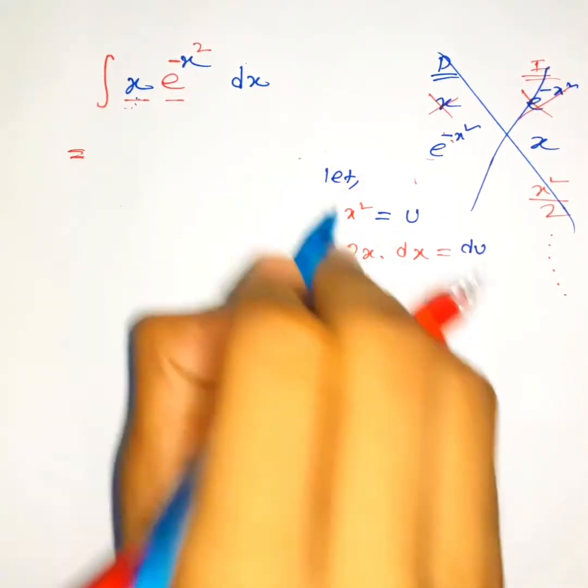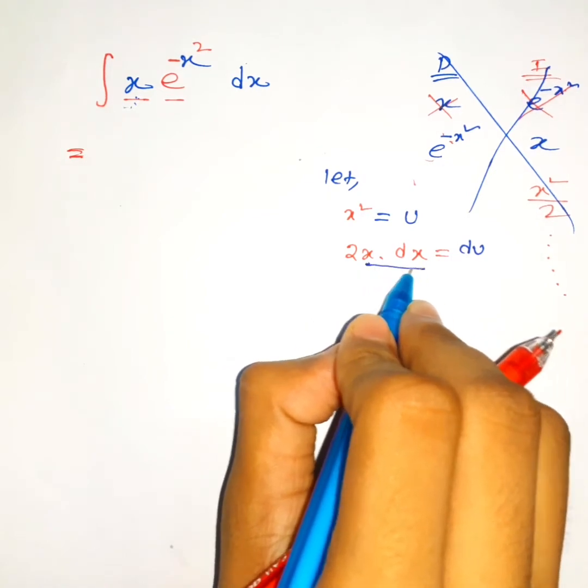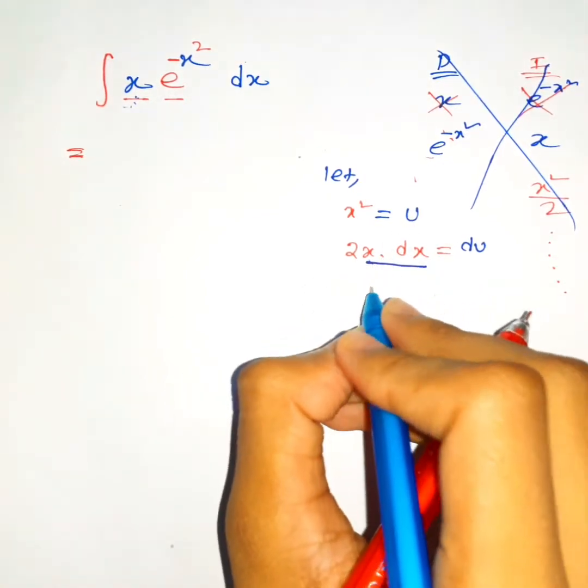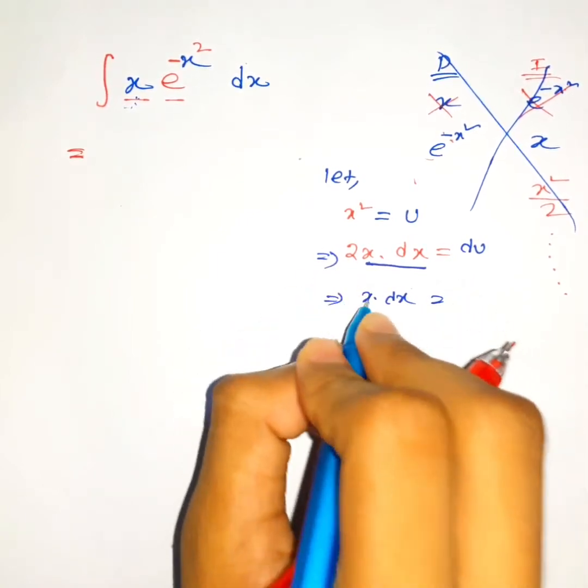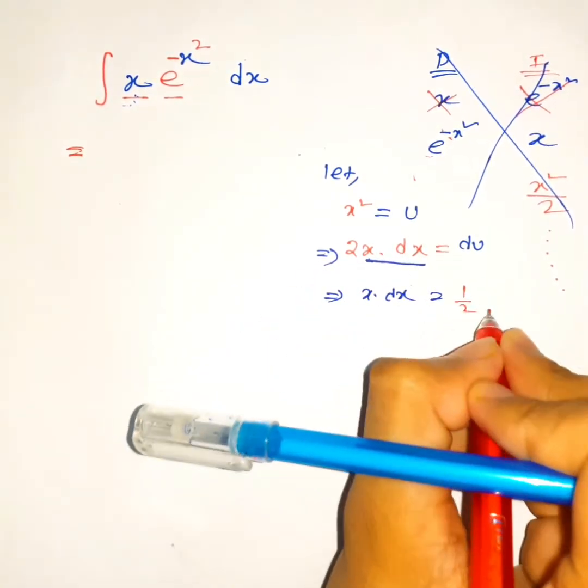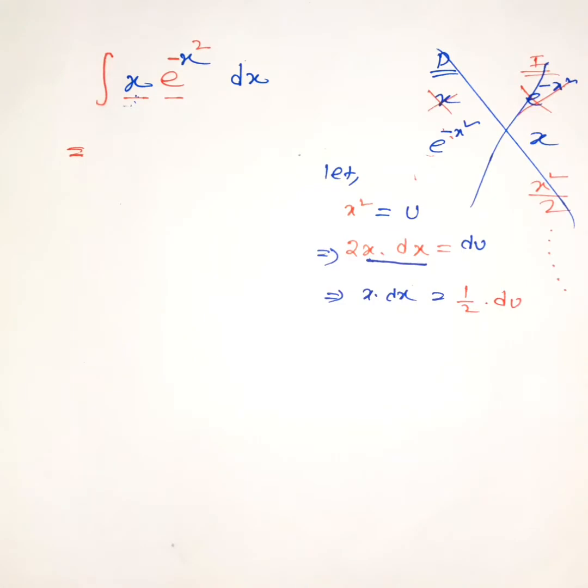Notice here we have x and dx, so we want to keep this part. If you divide both sides by 2, x dx equals half du. So x dx equals half du.